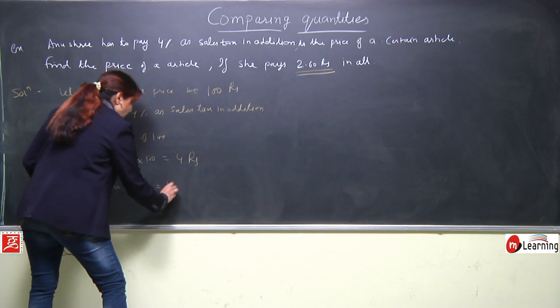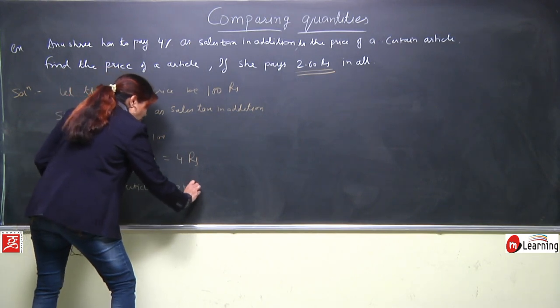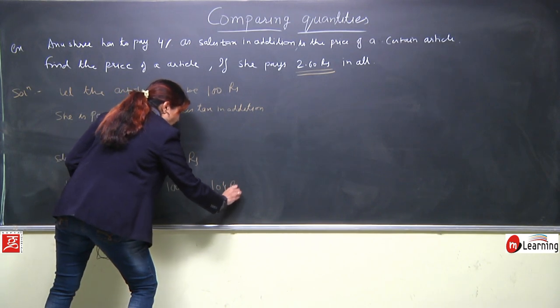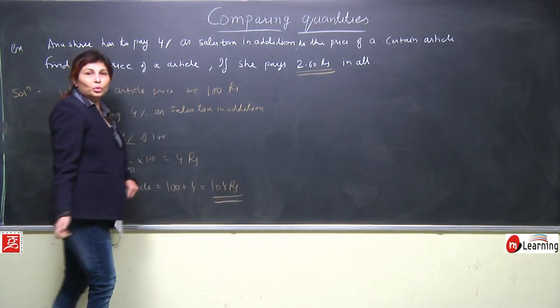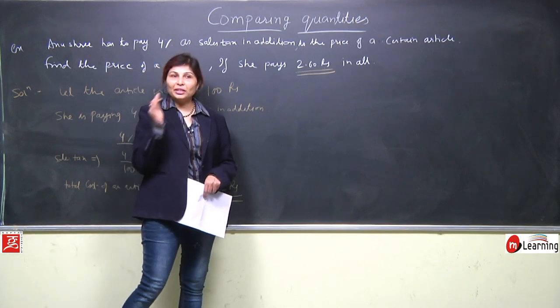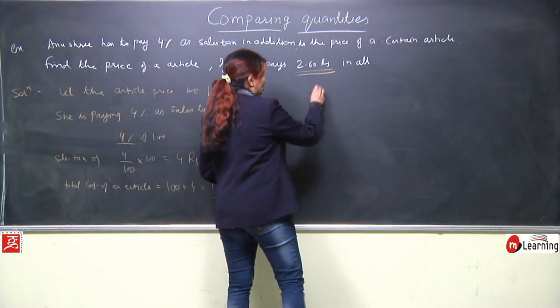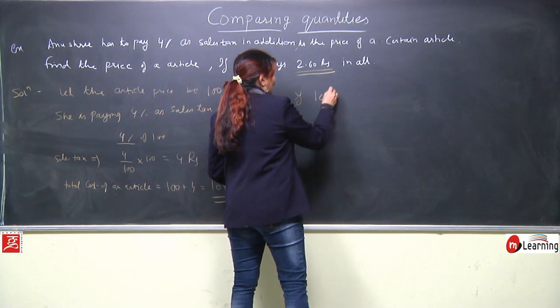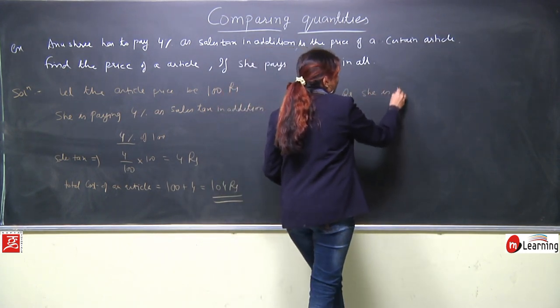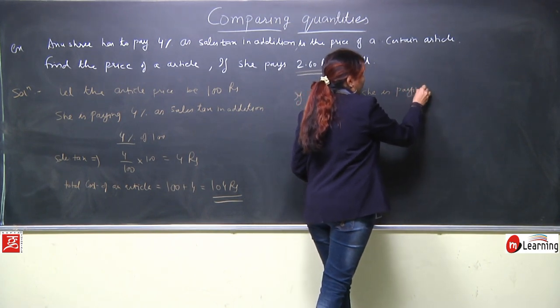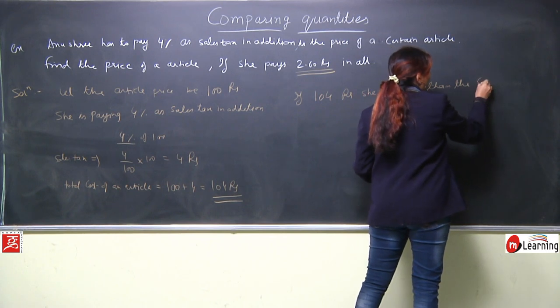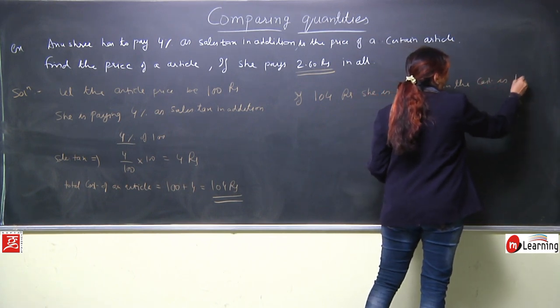So we will do 4 percent of 100 means 4 upon 100 into 100 is equal to 4 rupees. This is your sales tax. She is paying 4 rupees. So your total cost of an article is 100 rupees cost plus 4 rupees tax, so total cost of an article is 104 rupees. Now we'll use unitary method. See how simple it becomes.